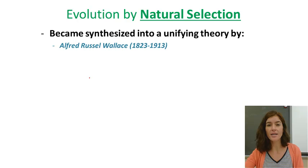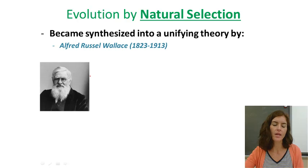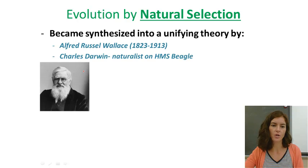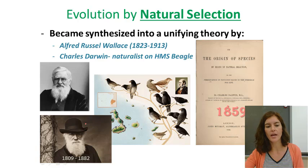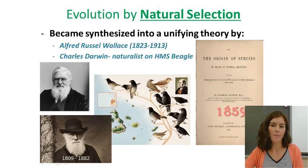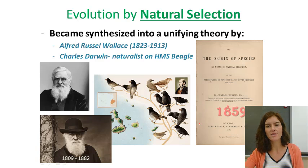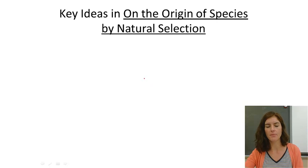Natural selection was synthesized into a theory by Alfred Russell Wallace, who lived from 1823 to 1913 — the lesser known of the two. Charles Darwin, a naturalist on the HMS Beagle, lived from 1809 to 1882 and is more famous for writing On the Origin of Species by Means of Natural Selection, published in 1859. It was not a widely accepted idea at the time, challenging current dogma, but is now widely accepted and proven using genetics.